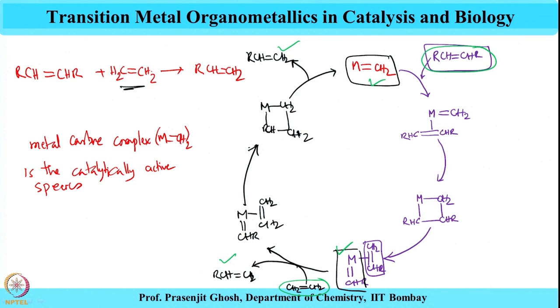Katz's contribution is discussed in the same breath as Chauvin, Grubbs, Petit, and Calderon, because it was Katz who validated the first mechanism through further experiments on Chauvin's proposal, which is why his name is taken alongside all three previous researchers.